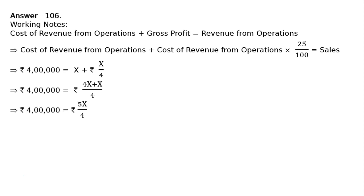That equals Rs. 4 lakh equals 5x by 4. This implies that x is equal to Rs. 4 lakh multiplied by 4 by 5. This implies that cost of revenue from operations is equal to Rs. 3 lakh 20,000.